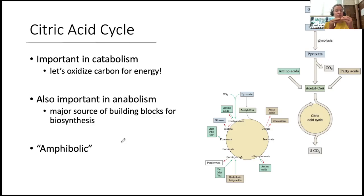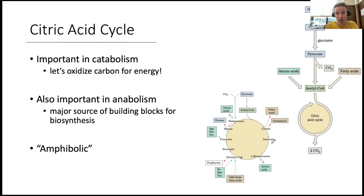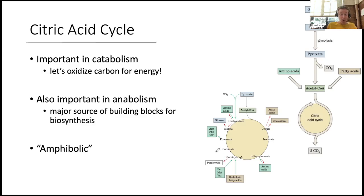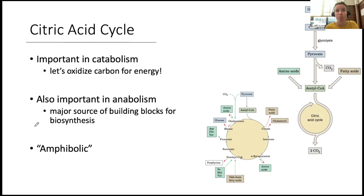All of this is happening in the mitochondrial matrix. The TCA is connected to oxidative metabolism, but it's involved in so much more — it's super important for anabolism as well. The citric acid cycle is a hub of metabolism and a major source of building blocks for biosynthesis of fatty acids, cholesterol, amino acids, and porphyrin rings, for example. Because it is used in both catabolism and anabolism, we call it amphibolic — it does both.